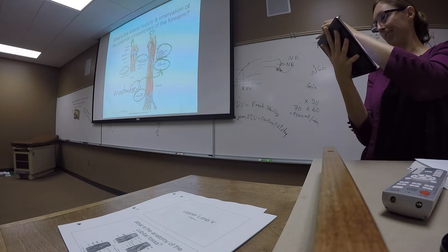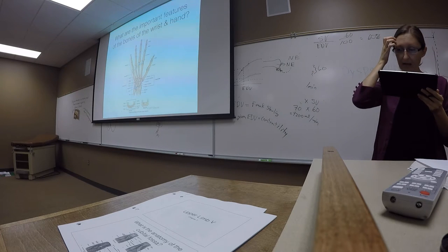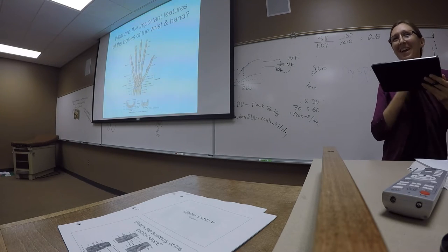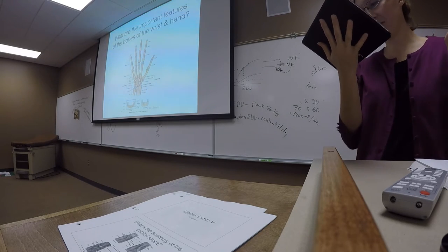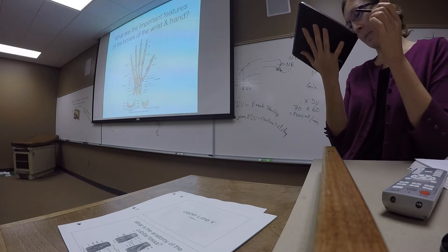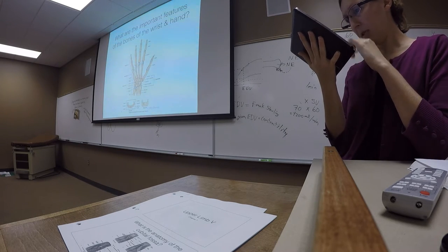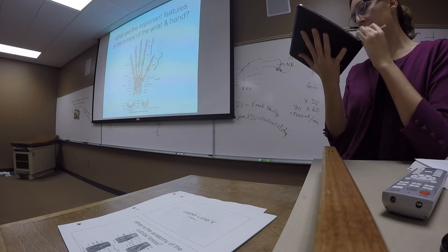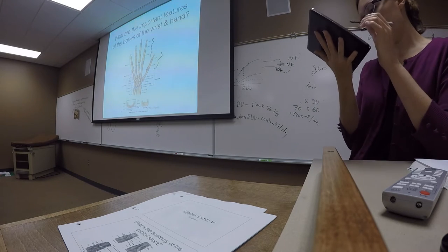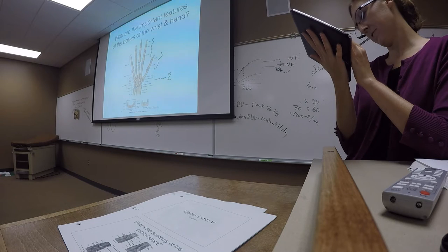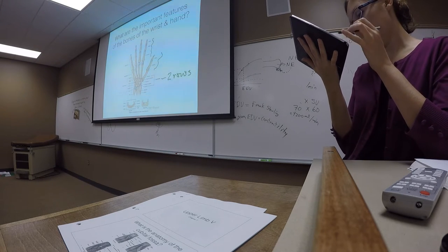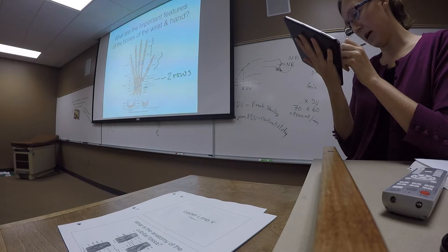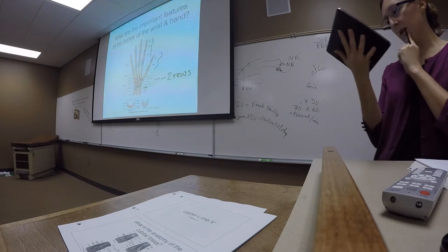Moving into the wrist and the hand: on the thumb (first digit), we only have distal and proximal phalanges, while on the rest of the digits we have three phalanges. The carpal bones are aligned in two rows roughly. One of the important ones we're going to talk about is the scaphoid bone, which is in the first row on the lateral side — a funny boat-shaped bone, with its blood supply coming in through its distal end.